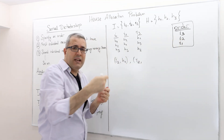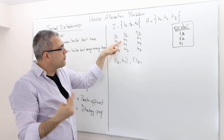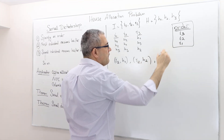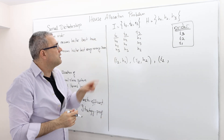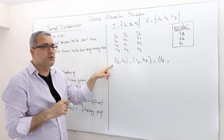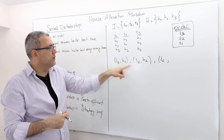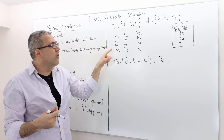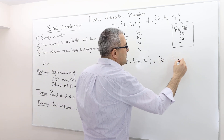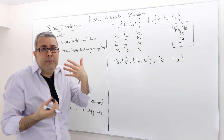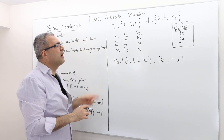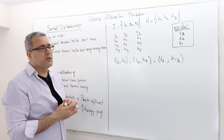Then individual two is the second to choose. Individual two prefers house two — is it available? Yes, it is. So he's going to get house two. Finally, individual one picks his house. He prefers house one, but it's not available because individual three got it. His second best is house two — sorry, that's not available either. The only available house is house three, which is his worst. But unfortunately, since he was the last to choose, that is the house he's going to be matched with. So this is the matching for this specific house allocation problem.